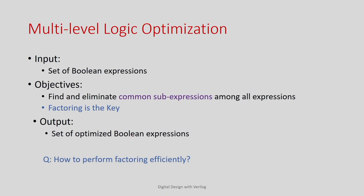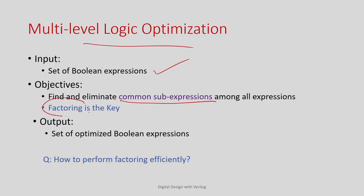Let us now formalize the multilevel logic optimization problem. You have a set of Boolean expressions — assuming multiple outputs — and the objective is to find common sub-expressions and reuse them. The key operation is factoring, and the result is a set of optimized Boolean expressions corresponding to each output. We will see how to do this factoring efficiently and automatically.